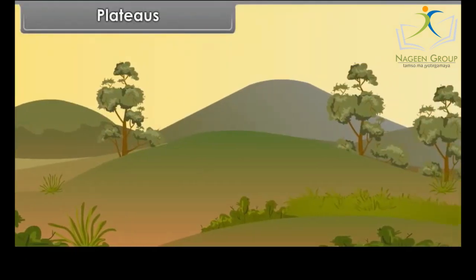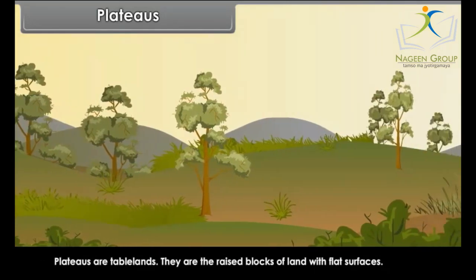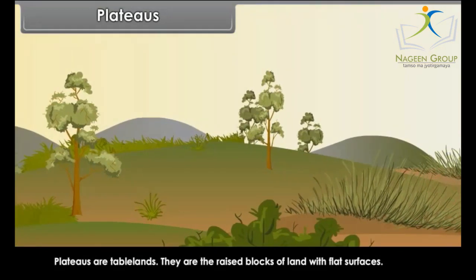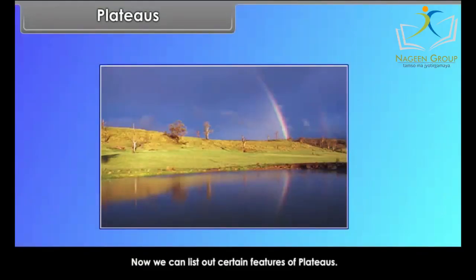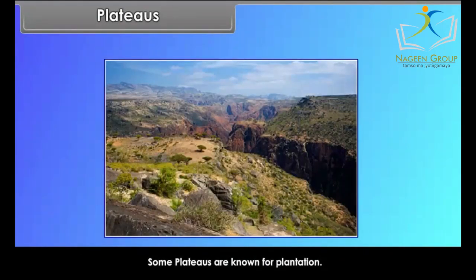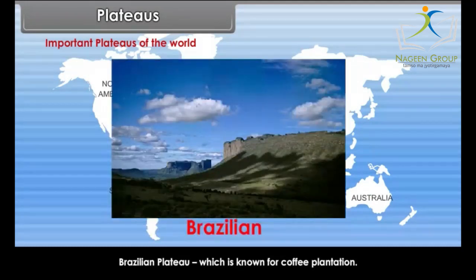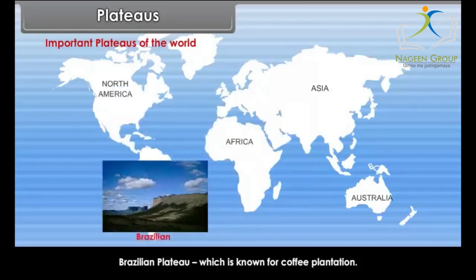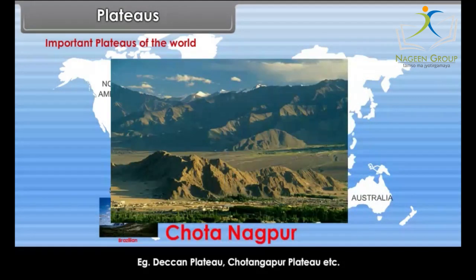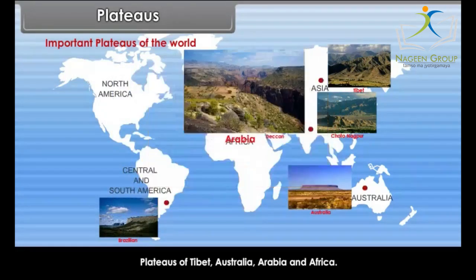Plateaus: The next type of landform is plateaus. Plateaus are tablelands — raised blocks of land with flat surfaces. Most plateaus of the world are rich in minerals and forest resources. Some plateaus are known for plantation. Important plateaus of the world include the Brazilian Plateau, which is known for coffee plantation. Indian plateaus are rich in mineral resources, for example the Deccan Plateau, Chota Nagpur Plateau, etc. Other notable plateaus include those of Tibet, Australia, Arabia and Africa.